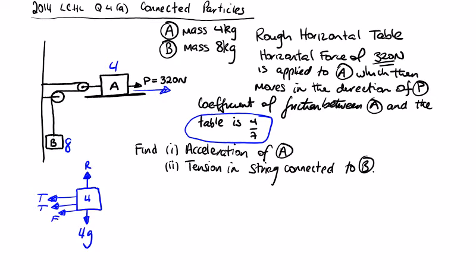So let's work out friction first. R is equal to 4g. F is equal to mu r, so F is equal to 4 over 7 by 4g, which is 16g over 7.